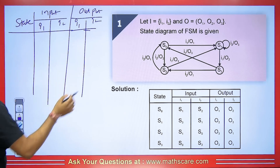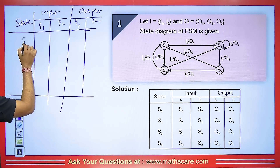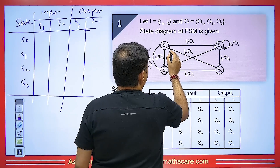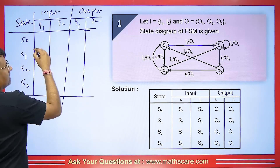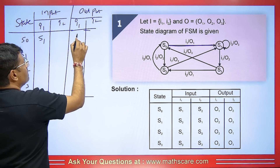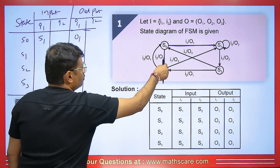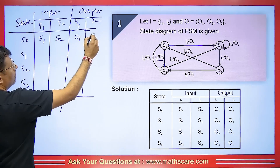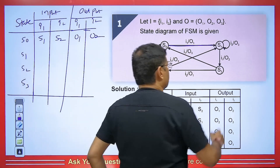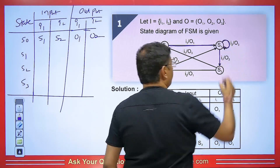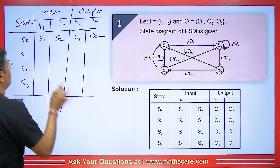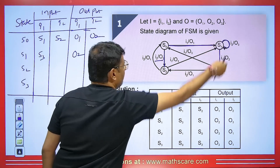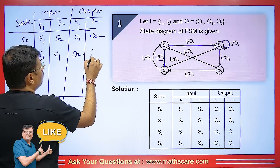This is the diagram and we will try to make a table. We write states S0, S1, S2, and S3. S0 is going to S1 with input I1 and output O1; with input I2, it goes to S2 and output O2. S1 is going to S3 with input I1 and output O2. S1 is making a self-loop with input I2 and output O3.